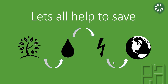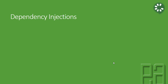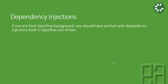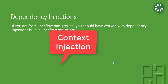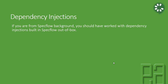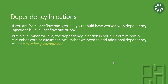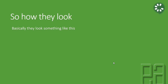If you are from a SpecFlow background you should have worked with dependency injection, which is built into SpecFlow out of the box — it's called context injection or dependency injection. In Cucumber for Java, however, dependency injection is not built into the Cucumber core or Cucumber JVM. Instead, we need to add an additional dependency called Cucumber Pico container, which is not available within the core of Cucumber, so you need to add this dependency to enable this feature.